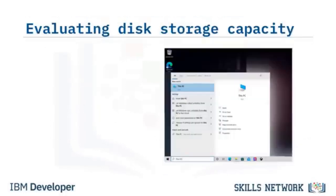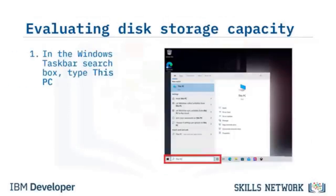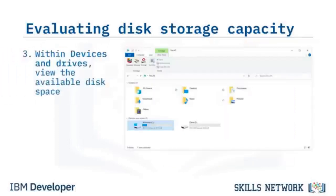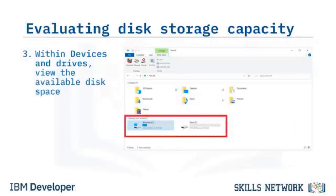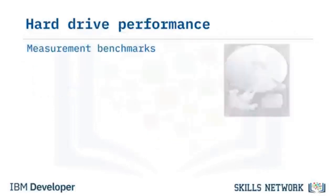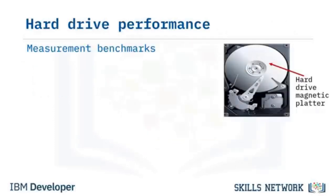To evaluate disk storage capacity and availability in Windows 10: type 'This PC' in the taskbar and press Enter, select Open, and within Devices and Drives, view the available disk space. Hard drive performance is measured by spin speed, access time, and transfer rate.